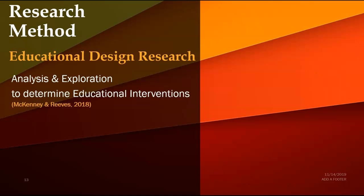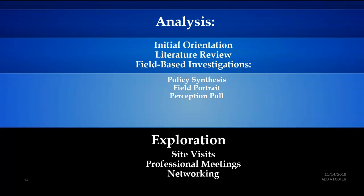The research method that will be used is educational design research, with two components: analysis and exploration. The analysis phase involves the initial orientation through the research proposal, the literature review, and field-based investigations such as reviewing the curriculum, interviewing teachers, and possibly conducting polls. The exploration phase includes site visits, observing classrooms, attending professional meetings of experts in the fields of critical race theory and critical white theory, and networking.